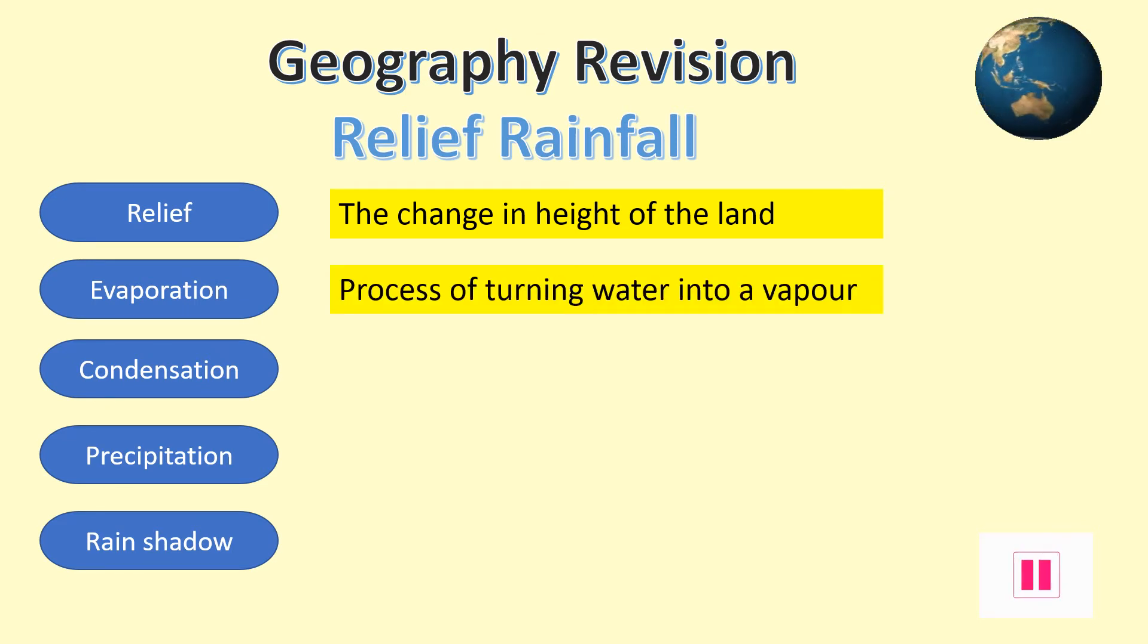The next three important terms are the main parts of the water cycle, which is constantly occurring all around us in the world. Evaporation occurs when a liquid such as water is turned into a gas or vapor. The sun usually provides solar energy to cause this process to occur.